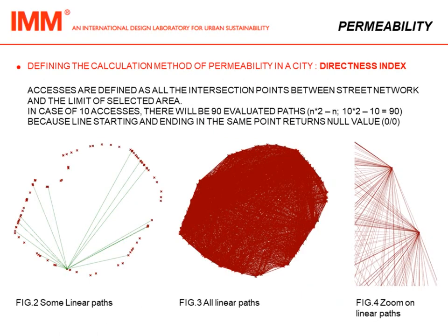In order to calculate it, we first need to define accesses, which are all the intersection points between the street network and the boundary of the selected area. In case of 10 accesses there will be 90 evaluated paths, because lines starting and ending at the same point return null values. In the picture below you can see examples of lines starting from one side of the area, then all lines together creating a sort of uniform red edge.